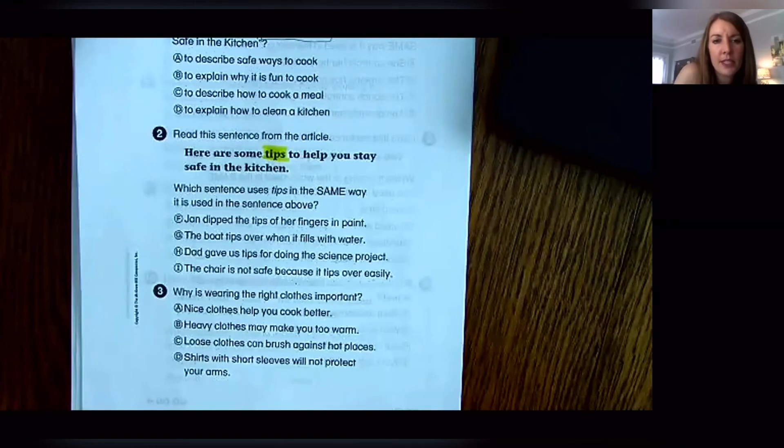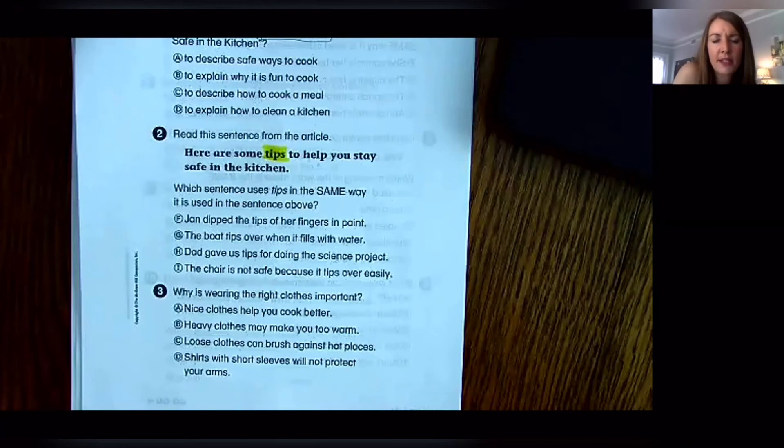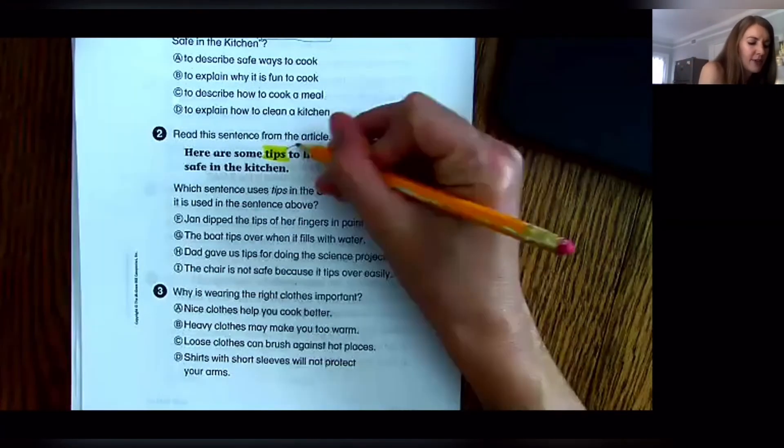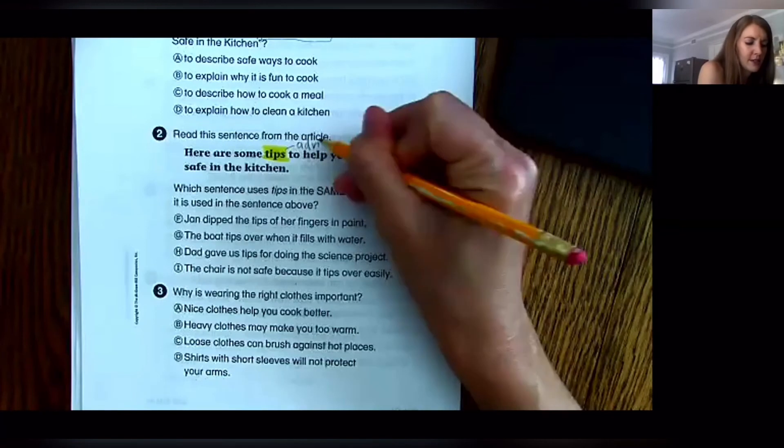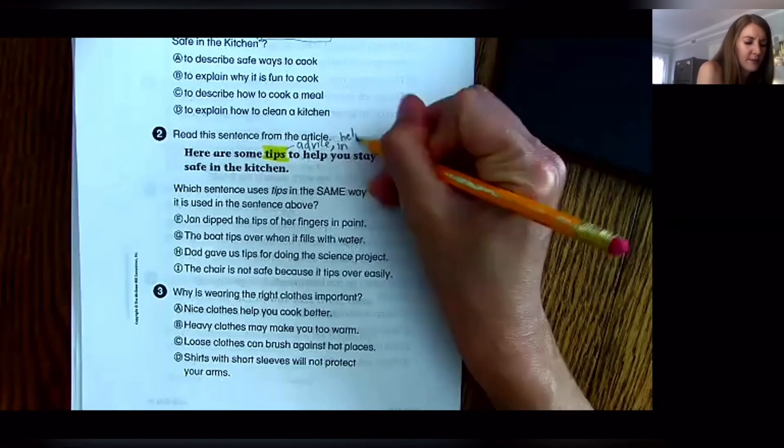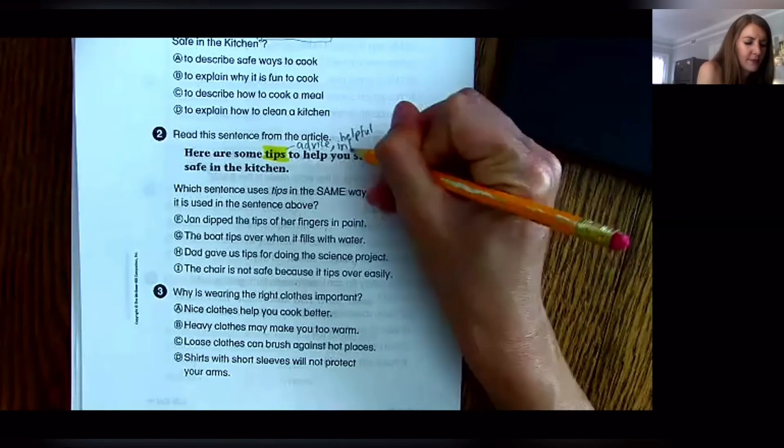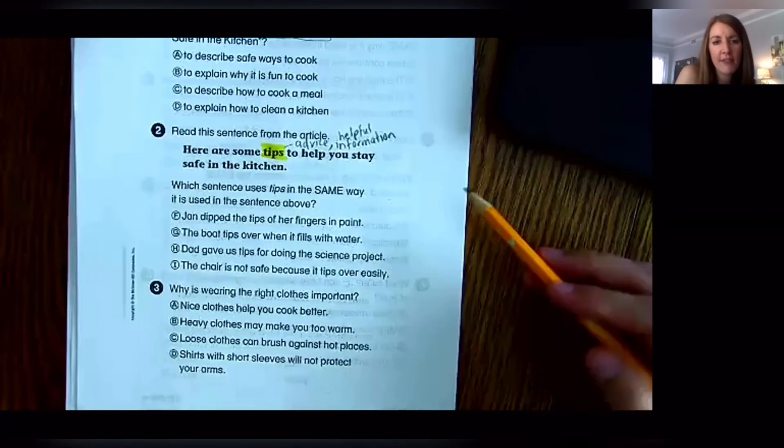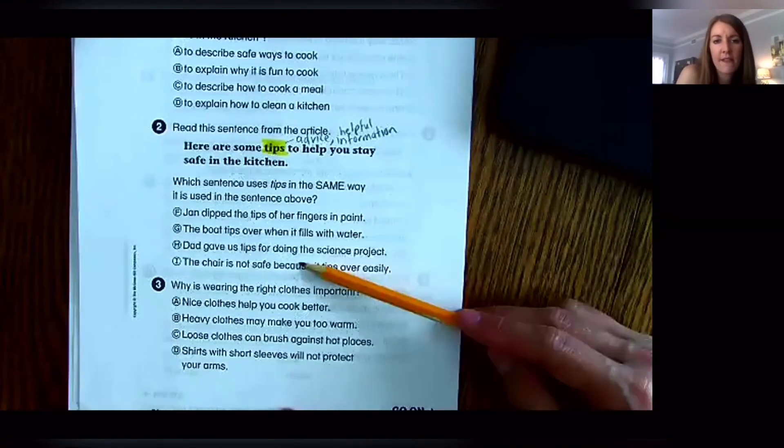Well, using the clues around it, they're giving us something to help us stay safe. I think it's going to be something like advice or information, helpful information. So as I go through these other sentences, I'm going to see if I find any of these that also mean advice or helpful information.